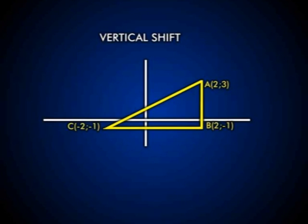Let us now look at the vertical shift, also known as the y shift. Basically, all I'm doing with this shift is taking my shape and either moving it upward or downward — each of its x values still remaining the same. Let us look at this example. I'm going to use triangle ABC. The coordinates are: A(2, 3), B(2, -1), and C(-2, -1).